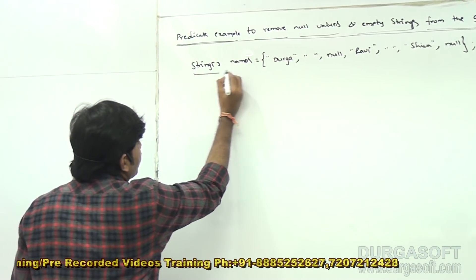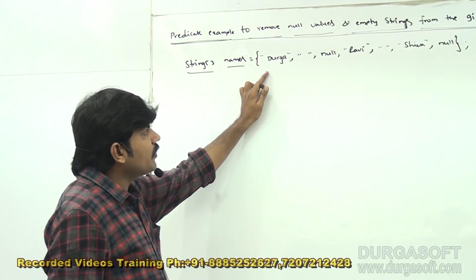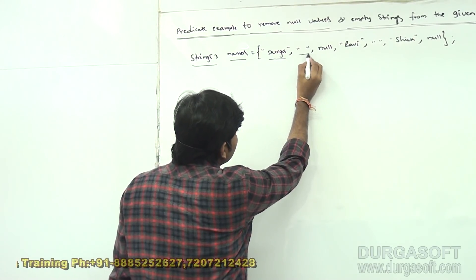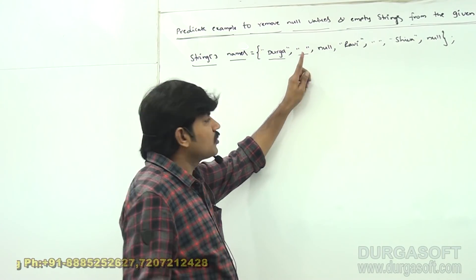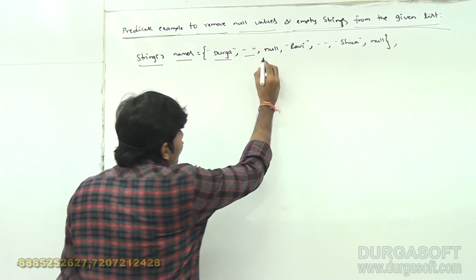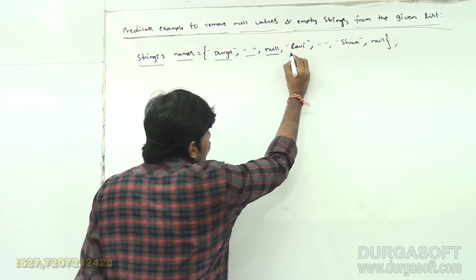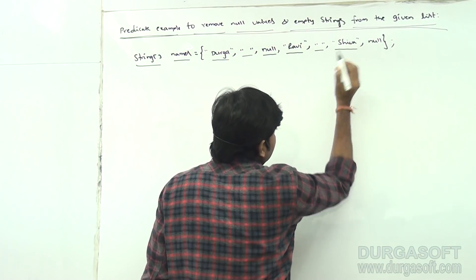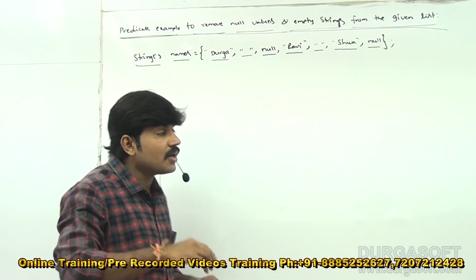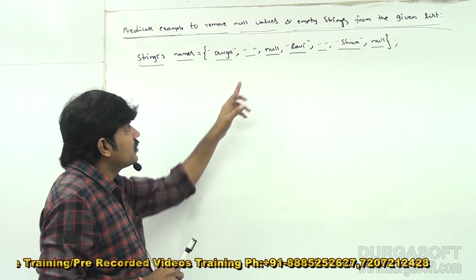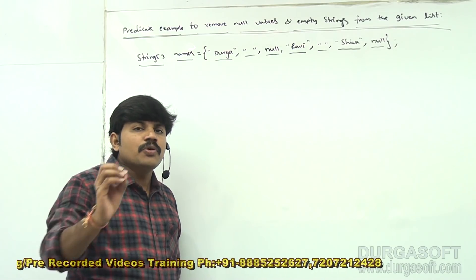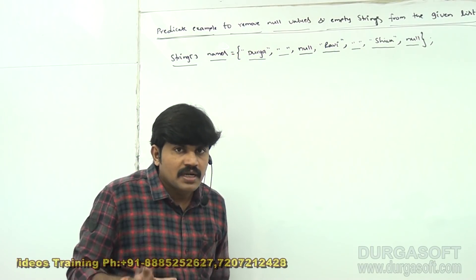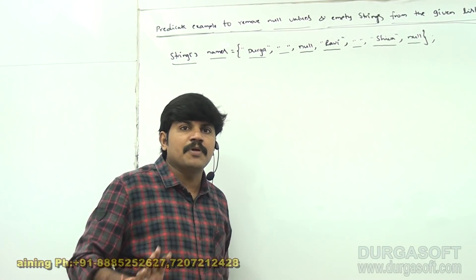This is my input array: String array 'names'. Observe there are multiple values in this string array. The first one is 'Durga', the second is an empty string — just double quotes open and close, no space. The third one is null, the fourth is 'Ravi', then again an empty string, then valid string 'Shiva', and again null. So from this array I want to remove null values and empty strings.